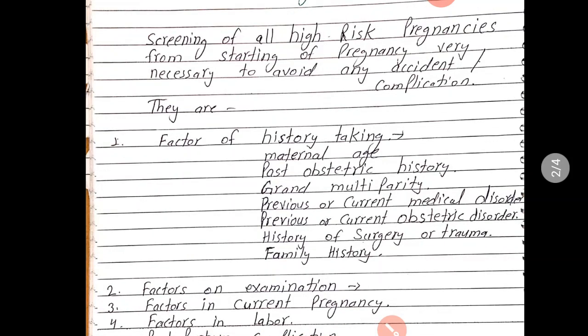Then past obstetrical history dekhte hain. Usmein kya hoga — previous congenital malformation, ya macrosomic baby, ya repeated abortion, repeated preterm labor, small-for-dates or dead babies, still birth, caesarean section, ya forcep or ventouse delivery — agar uski hui ho to uski history hum lenge.